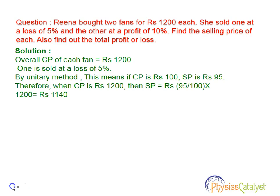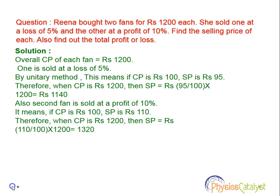That is equal to rupees 1140. Now for the second fan, it is sold at a profit of 10%. By the unitary method, if cost price is 100 then selling price will be 110.